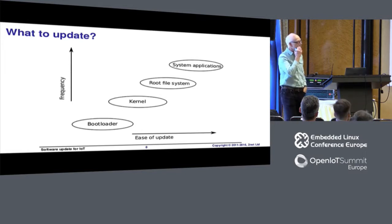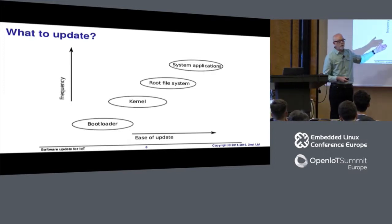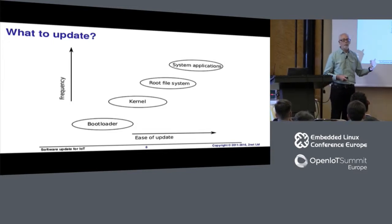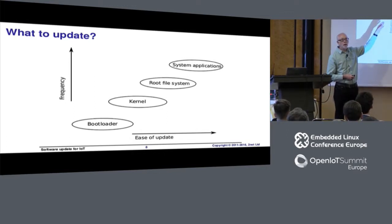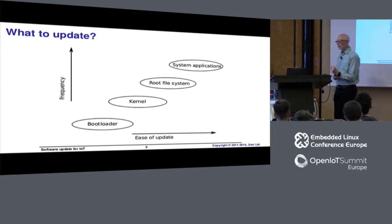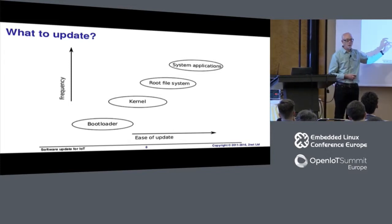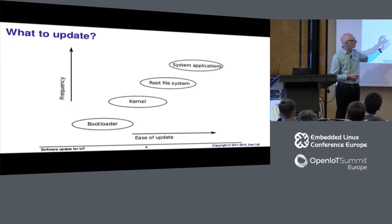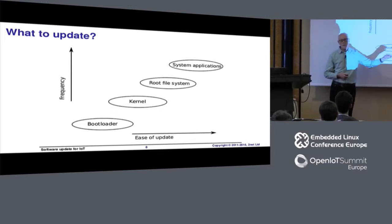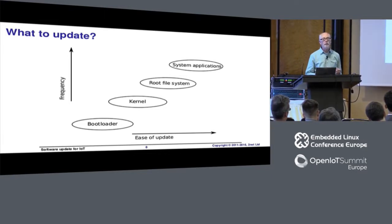What are we going to update? This is a diagram showing the main components of an embedded system: bootloader, kernel, root file system, applications — ranged against the frequency you're likely to want to update them, and how easy it is to update. The main conclusion is that the one component that's really hard to update, and therefore not usually updated, is the bootloader. The other components are increasingly easy to update — certainly the root file system and applications need to be updated, and it's quite possible the kernel needs to be updated as well. I'm talking about updating everything but the bootloader. That is a constant.